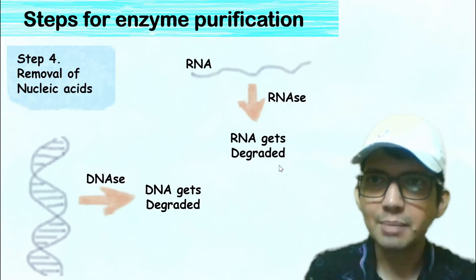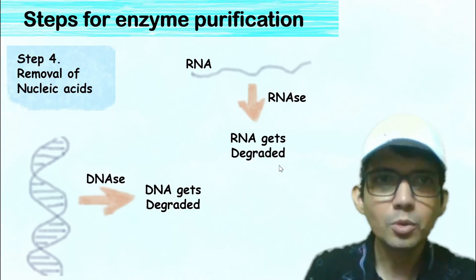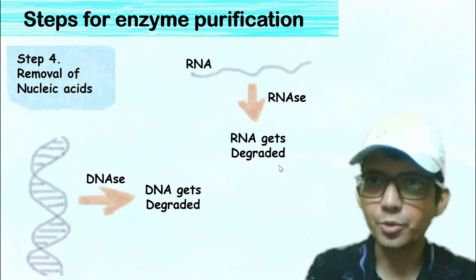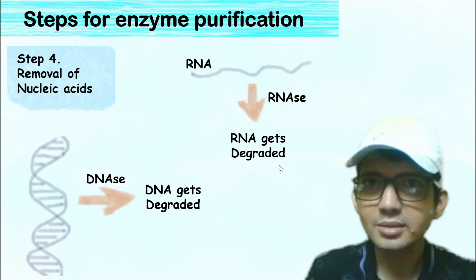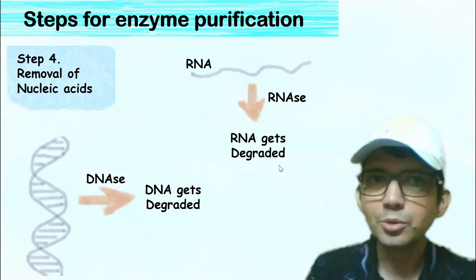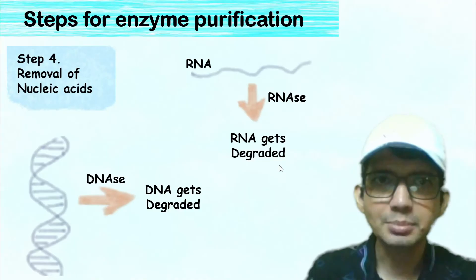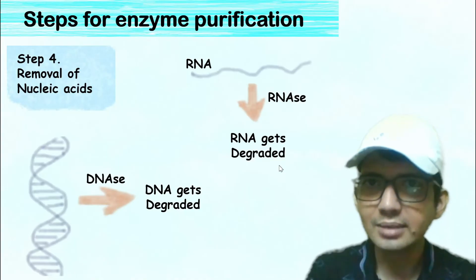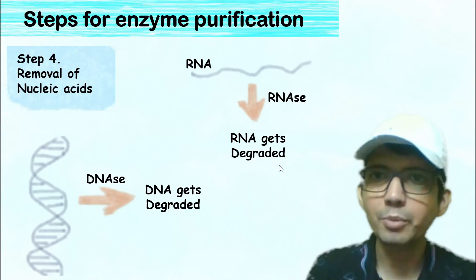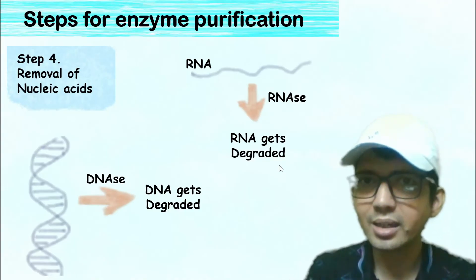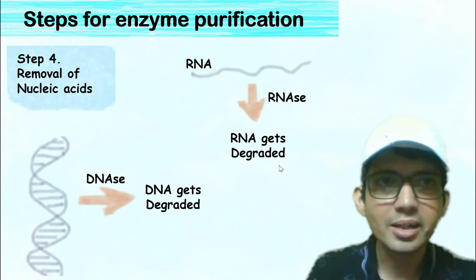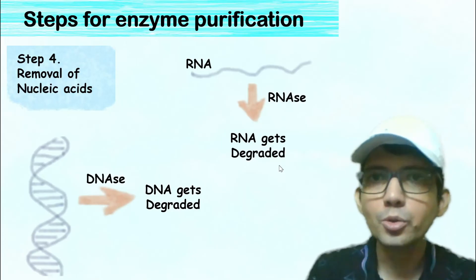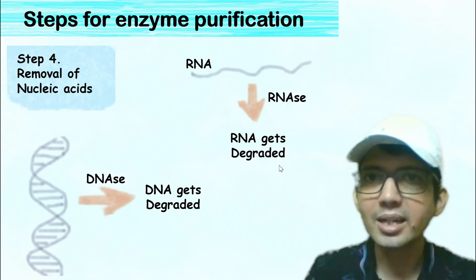The fourth step is removal of nucleic acid. For this, we use enzymes like DNase to remove DNA and enzymes like RNase to remove RNA.